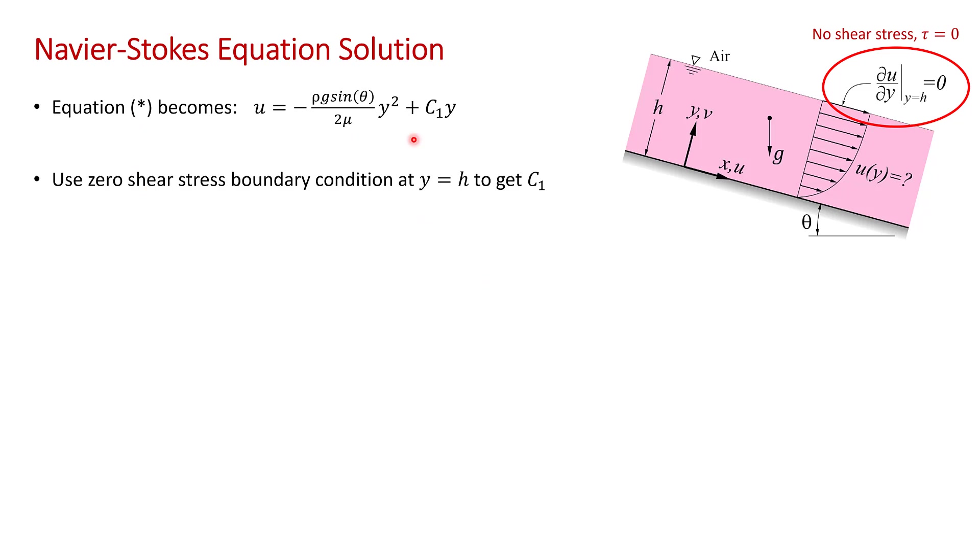Here's the new equation star, but now we have c₂ = 0. To get this remaining constant c₁, we use the zero shear stress boundary condition y = h that I discussed previously. So on the previous slide, after our first integration, we had that du/dy = -ρg sin θ/μ y + c₁.